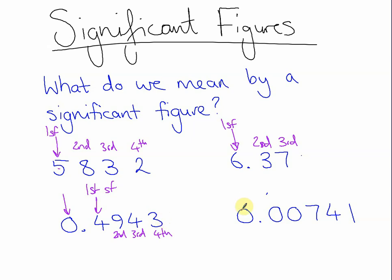For a number like this, this zero doesn't really tell me anything about the size of the number. Nor does this one — it tells me a little bit, I know it's going to be pretty small. But it's not until I reach the next column that I start to get an understanding of just how small this number is. So this is the first significant figure, then we have the second and the third.